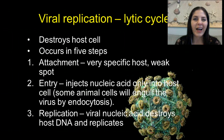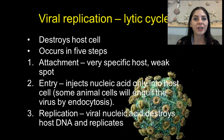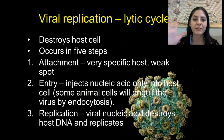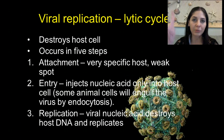So viral replication — how do they replicate? There are two different ways in which viruses replicate: the lytic cycle, which occurs very quickly, and the lysogenic cycle, which occurs much more slowly and takes a very long time. We're going to discuss the lytic cycle first. The lytic cycle destroys the host cell and occurs in five steps. Make sure you take very good notes because this will be on the test.